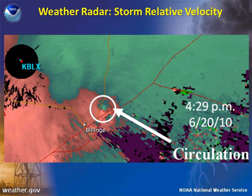In this example, we can see that the circulation is well-defined within the thunderstorm that produced the June 20, 2010 Billings tornado. In the white circle, inbound velocities, which appear as the cool blue-green color, are again right next to outbound velocities, which appear as the warm salmon red colors.